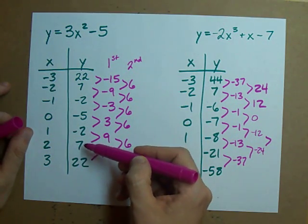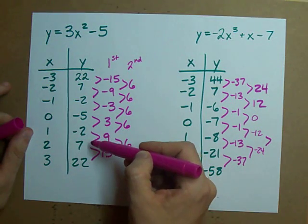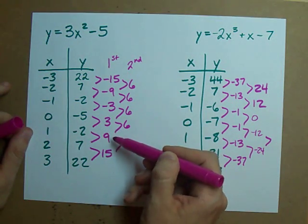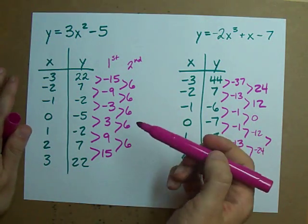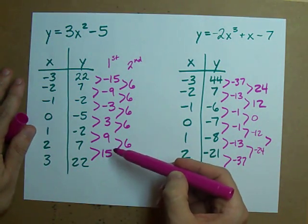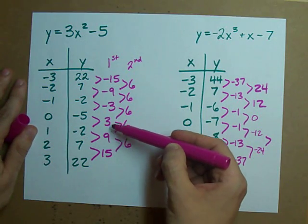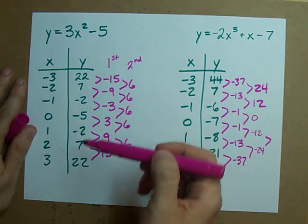22 minus 7 gives me 15, 7 minus negative 2 gives 9, and so on. Now I like to live on the wild side and I like to do second differences as well, so I take those first differences and subtract each of those from each other.